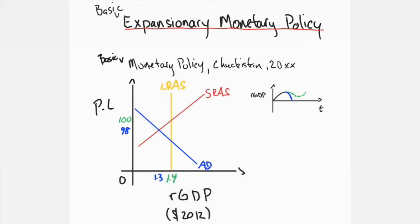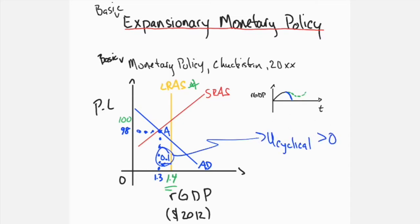Assume that the Chakistani economy does not grow — that is, the long-run aggregate supply does not change. The economy is in recession. Its potential GDP is given by the long-run aggregate supply at 1.4 units of 2012 real GDP. The aggregate demand curve intersects the short-run aggregate supply curve at point A, with an output of 1.3 units of 2012 real GDP at a price level of 98, indicating a recessionary gap of 0.1 units and cyclical unemployment. As a countermeasure, the central bank institutes an expansionary monetary policy, increasing the money supply to reduce interest rates and increase aggregate demand.